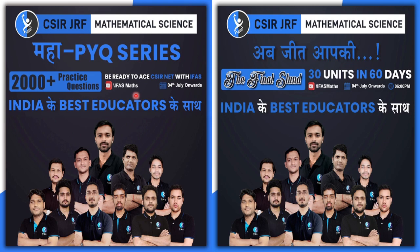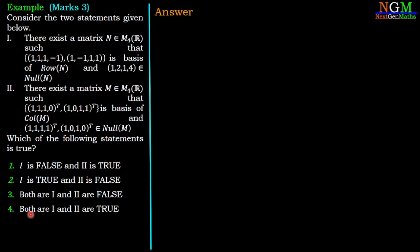Now we are back to the solution. We will check both statements one by one. First statement: It says there exists a matrix N such that {(1,1,1,-1), (1,-1,1,1)} is a basis for the row space of N. So if we construct N with this condition, then N equals [1,1,1,-1; 1,-1,1,1] for the first two rows, and we don't know about the last two rows.